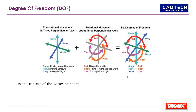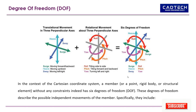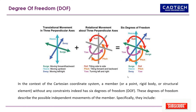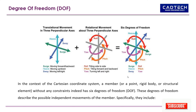A member, or a point, rigid body, or structural element, without any constraints indeed has six degrees of freedom (DOF). These degrees of freedom describe the possible independent movements of the member.